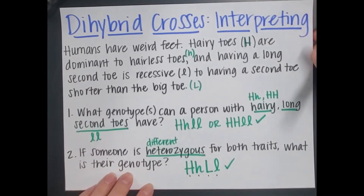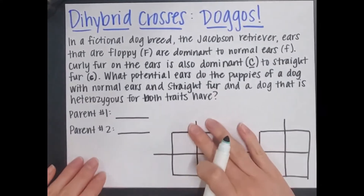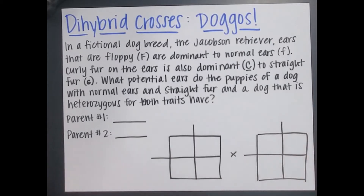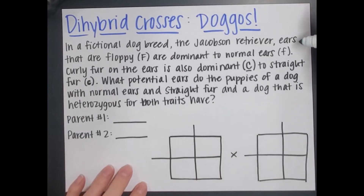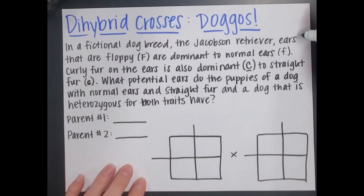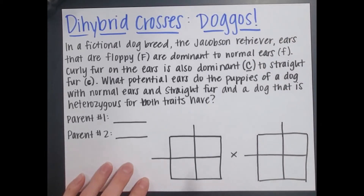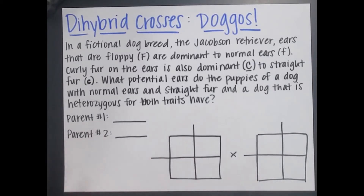Now that we've interpreted some dihybrid crosses, let's look at an actual example. I made up a fictional dog breed — the Jacobson retriever. In this fictional breed, floppy ears are dominant to normal ears, and curly fur on the ears is also dominant (capital C) to straight fur on the ears. The question is: what potential ears do the puppies of a dog with normal ears and straight fur, and a dog that is heterozygous for both traits, have?